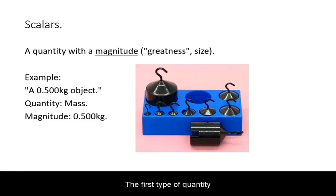The first type of quantity is a scalar. This type of quantity is simple because it can be expressed based only on its size or more properly its magnitude.